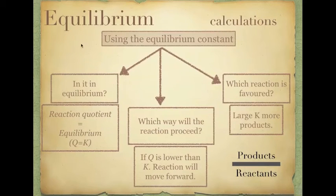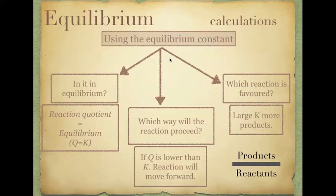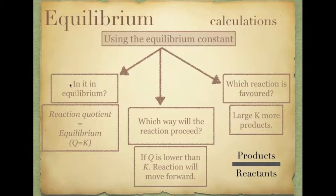Let me summarise by looking at equilibrium calculations and how we can use the equilibrium constant. It tells you about the extent of the reaction — about which one's favoured, whether you've got products favoured or reactants favoured. Here are the three ways we can use the equilibrium constant. Hopefully you get an idea from the examples I've done, but here are a few more.